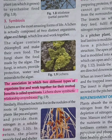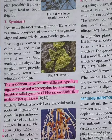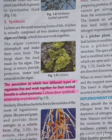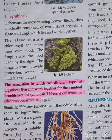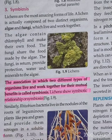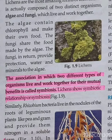In return, fungi provide protection, water, and minerals to the algae. When both algae and fungi support each other for their mutual benefits, this association is called symbiosis. The association in which two different types of organisms live and work together for their mutual benefits is called symbiosis. So lichens show a symbiotic relationship.